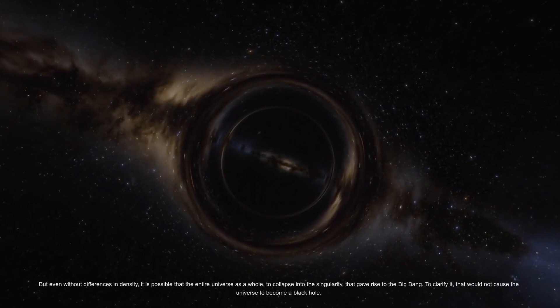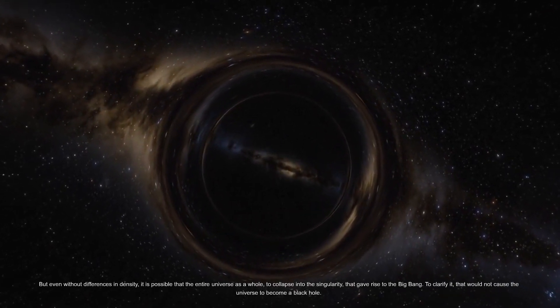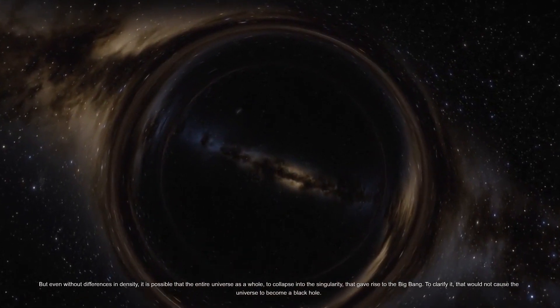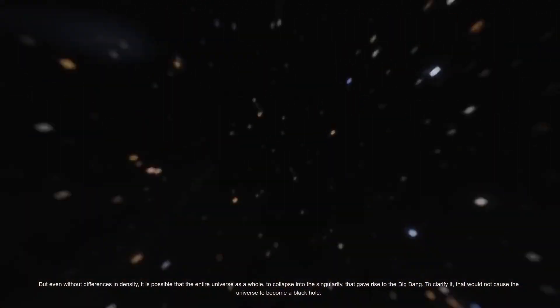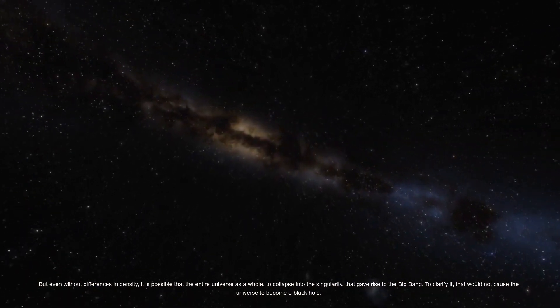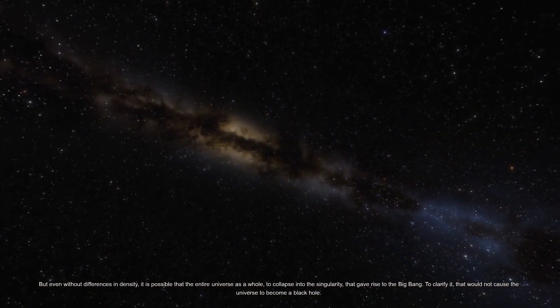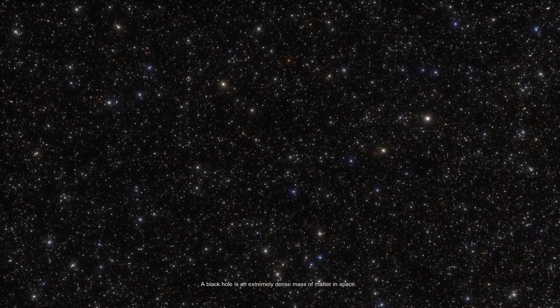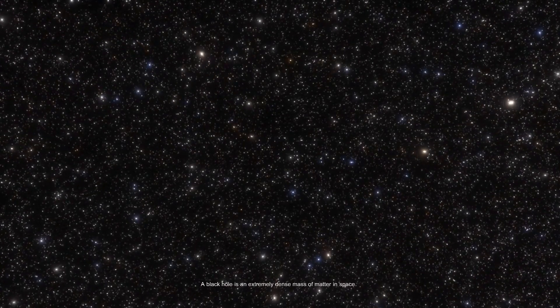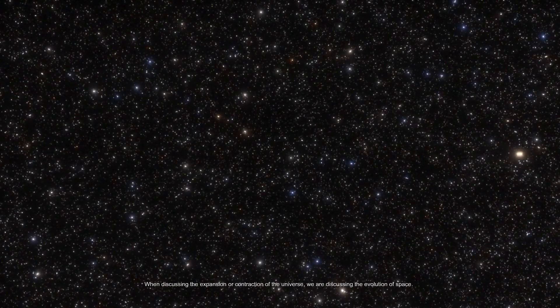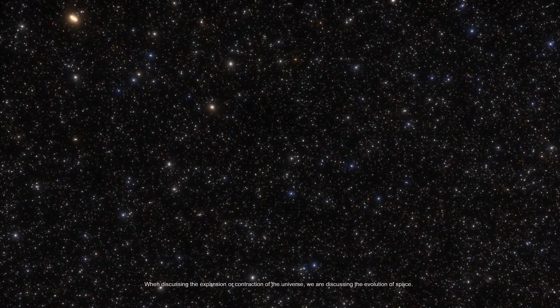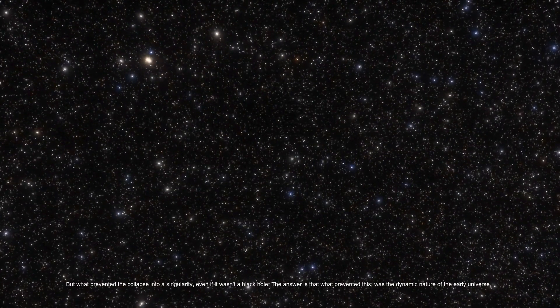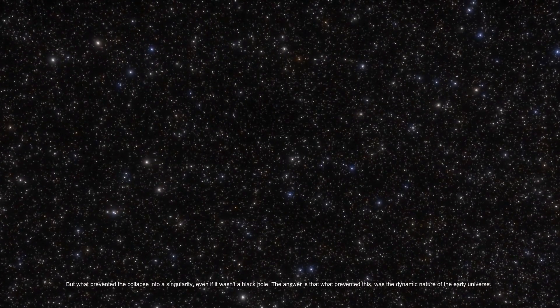But even without differences in density, it is possible that the entire universe as a whole could collapse into the singularity that gave rise to the Big Bang. To clarify, that would not cause the universe to become a black hole. A black hole is an extremely dense mass of matter in space. When discussing the expansion or contraction of the universe, we are discussing the evolution of space. But what prevented the collapse into a singularity, even if it wasn't a black hole?